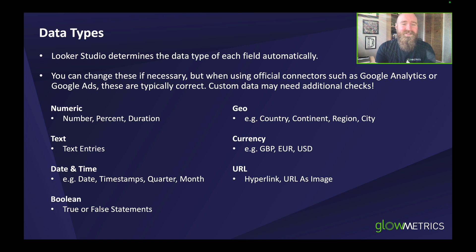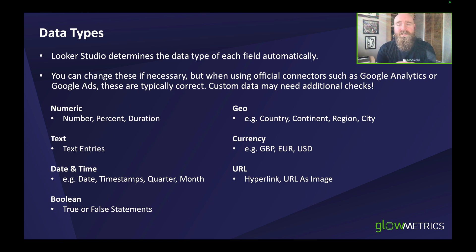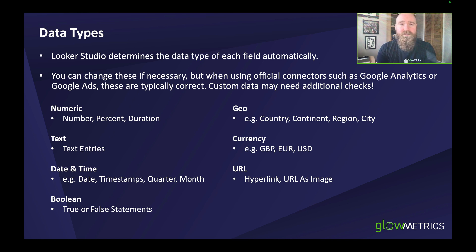Data fields come in different data types — things like numbers, percent, durations, text entries, boolean statements, geographical data, URLs, and e-commerce data. With an official connector like Google Analytics, all of that will be handled automatically. If you're using more customized databases like Google Sheets or Excel or your own connector, you may need to review and adjust that data set to make sure it's exactly as you'd expect before building your reports.